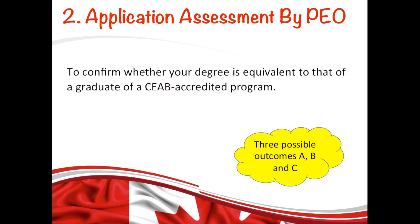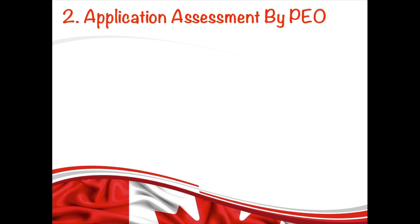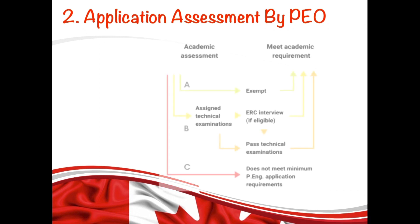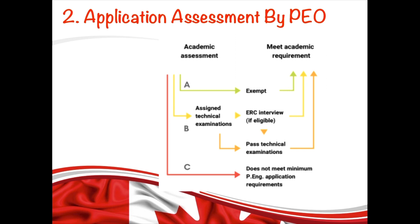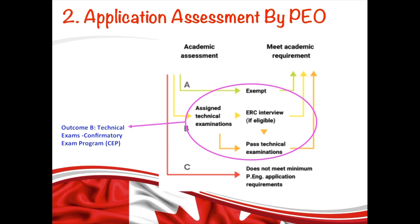Based on the assessment by the academic requirement committee, there are three possible outcomes: A, B, and C. Outcome A means the applicant has met academic requirements and can proceed to the next step — this happens most often when you have a degree from a Canadian institution. Outcome B means you haven't met the academic requirements and will have to write technical exams, also called confirmatory exams, which typically applies if your degree is from outside Canada.